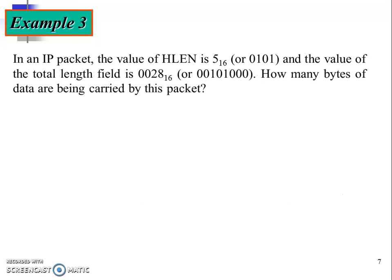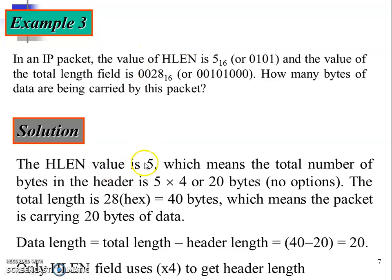Example three: in an IP packet the value of hlen is 5 — this time given in hexadecimal. The binary of 5 is 0 1 0 1. The value of the total length field is 0 0 2 8, also in hexadecimal. How many bytes of data are being carried by this packet? The hlen value is 5, which means the total number of bytes in the header is 5 × 4 = 20 bytes. As mentioned previously, when hlen is 5, the options field is 0 — there are no options.